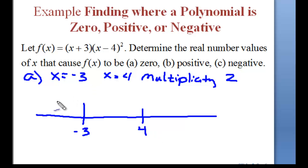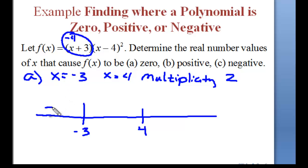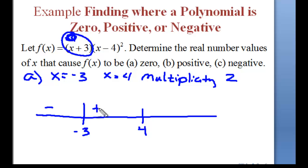If x is less than negative 3, let's say we have negative 4, we're going to have a negative number for this first factor. So, for the first factor, it's negative when x is less than negative 3. If x is between negative 3 and 4, let's make it 0 — we have a positive. And if x is greater than 4, we're still going to have a positive number.